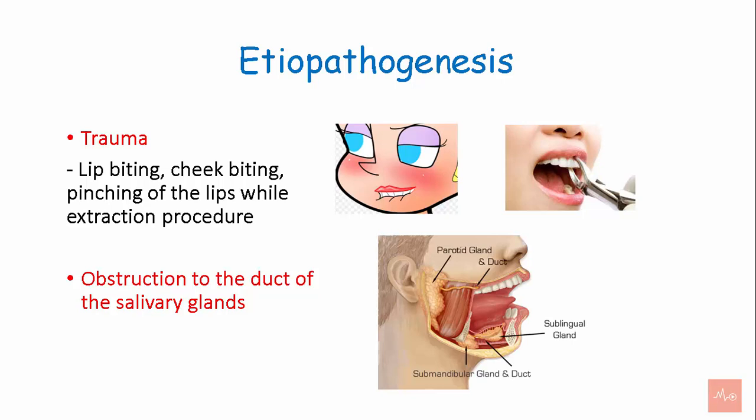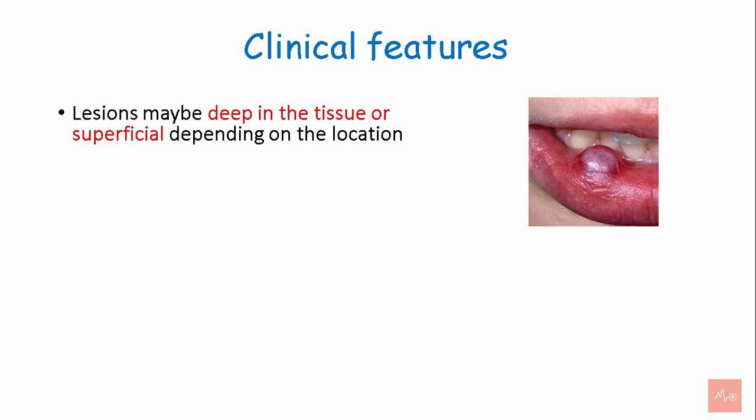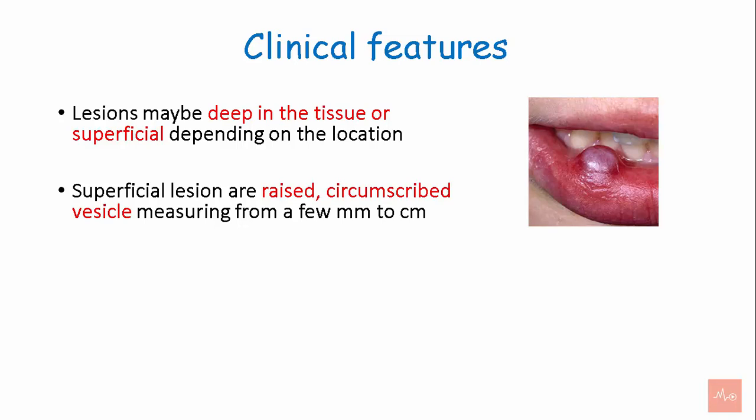Clinical features: Lesions may be deep in the tissue or superficial depending on their location. Superficial lesions are raised, circumscribed vesicles measuring from a few millimeters to centimeters. They have a bluish translucent color.